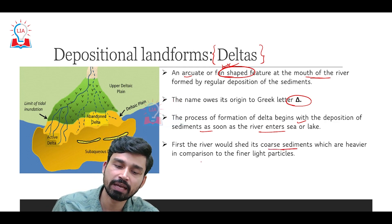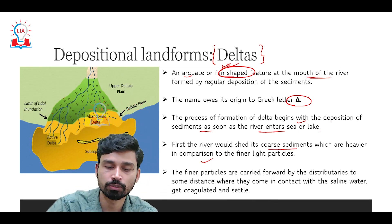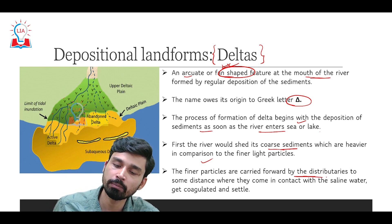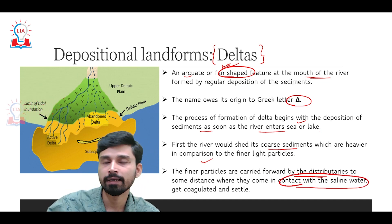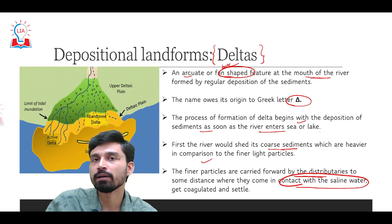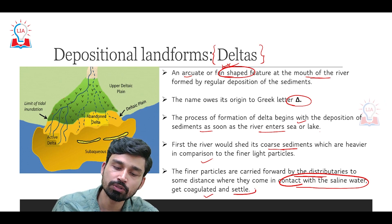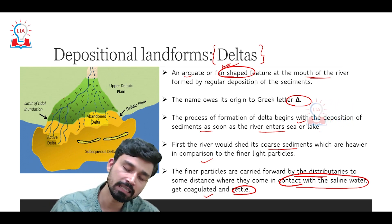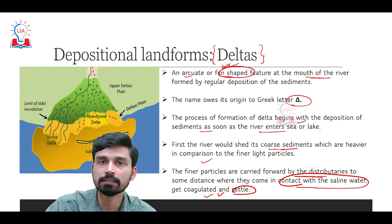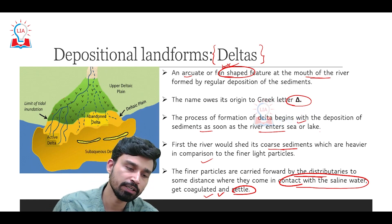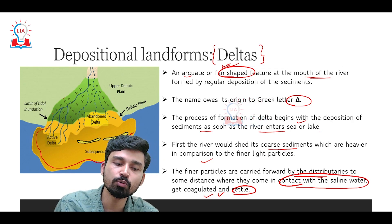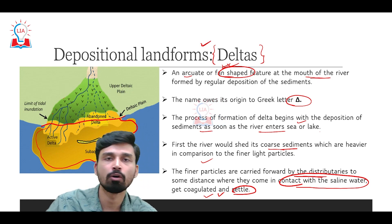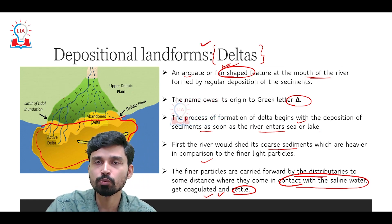First the river sheds its coarser sediments, which are heavier, depositing them around the river banks as the river enters the sea. Then the finer particles are carried forward by the distributaries to a certain distance into the sea region, where they come into contact with saline water. Due to contact with the saline water, the finer sediments start to coagulate and settle at the bottom of the sea. Since it is in the coastal region, the sea bottom is not very deep, and continuous accumulation of these finer sediment particles gradually raises them above the sea surface, forming a landmass extending toward the sea from the coast — which we call a delta.